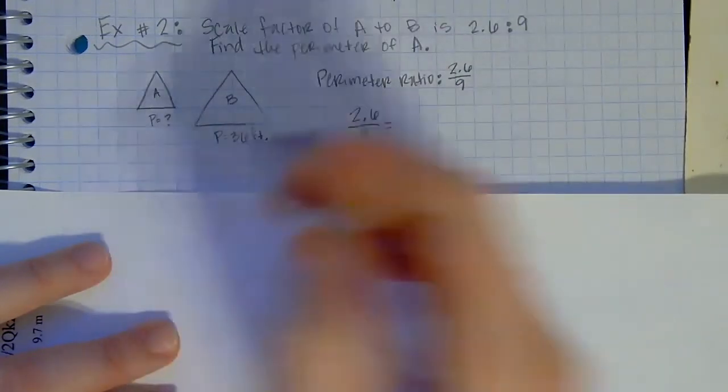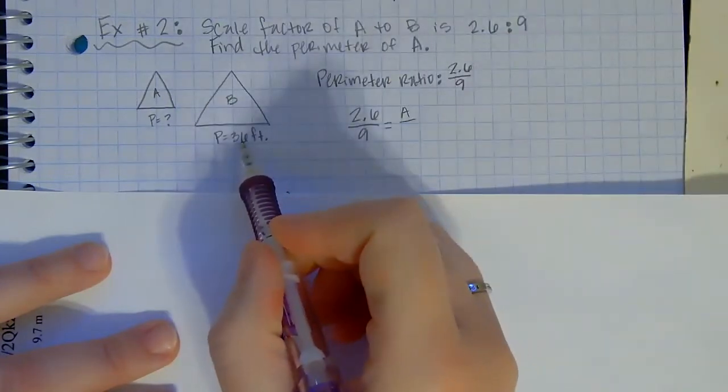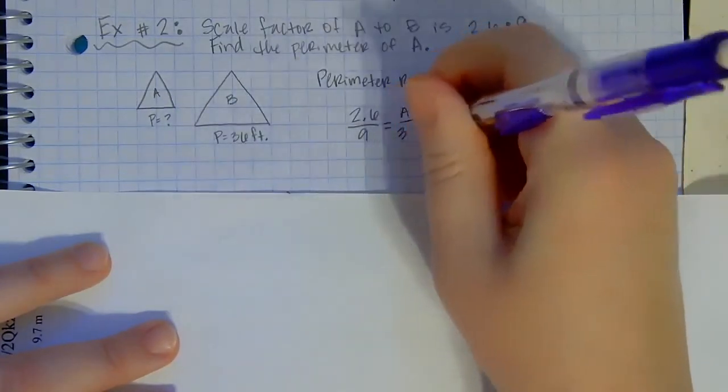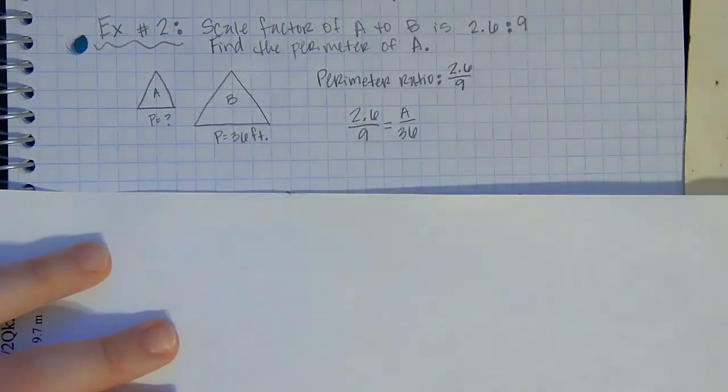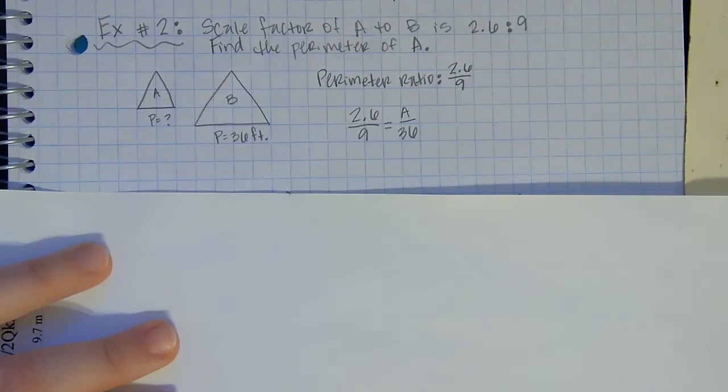So I put A perimeter on top, which I don't know, I'll just put A. And B perimeter on the bottom, which is 36. A to B, A to B, we're talking about perimeters. So then now I need to solve for A.